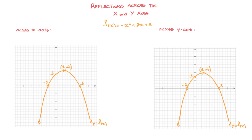At the bottom of the screen here, I've drawn two times the same graph. In each case, that's the curve y equals f of x, where f of x is the function whose equation is negative x squared plus 2x plus 3. On the left-hand side, we'll learn how to reflect this graph across the x-axis, and on the right-hand side, across the y-axis. This will work for any curve whose equation is given by y equals f of x.